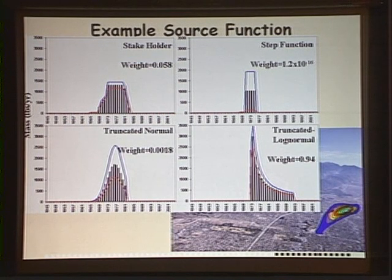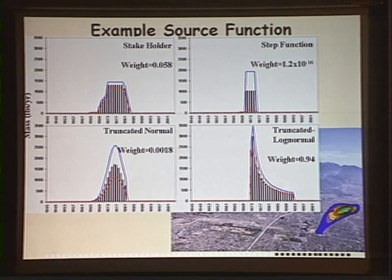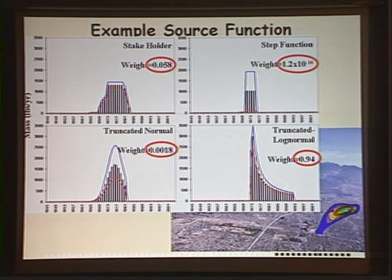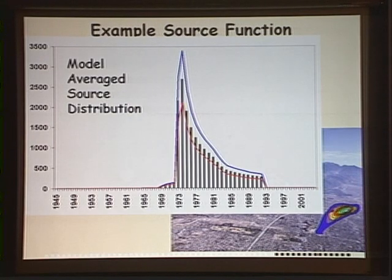For the site near Los Angeles, one issue was what the source function looks like. With just one flow model, the parameters of the source function were estimated and models were weighted. Here are four different suggested source functions with their confidence intervals and weights. One was far more likely than the others, so when doing the multi-model averaging, the final source function looks more like that distribution than any of the others.